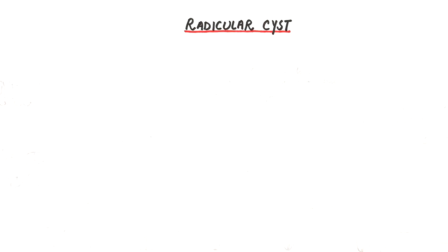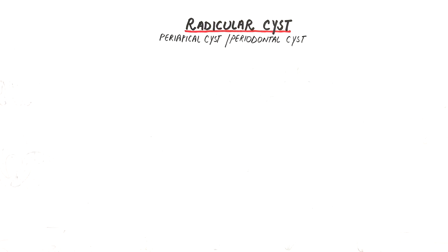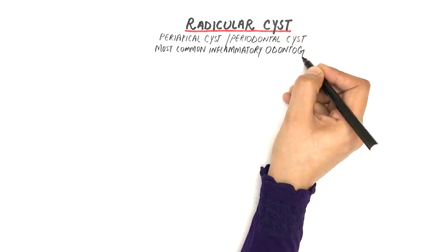Radicular cyst, also known as periapical cyst or apical periodontal cyst, arises around the apex of a non-vital tooth. It's the most common inflammatory odontogenic cyst.